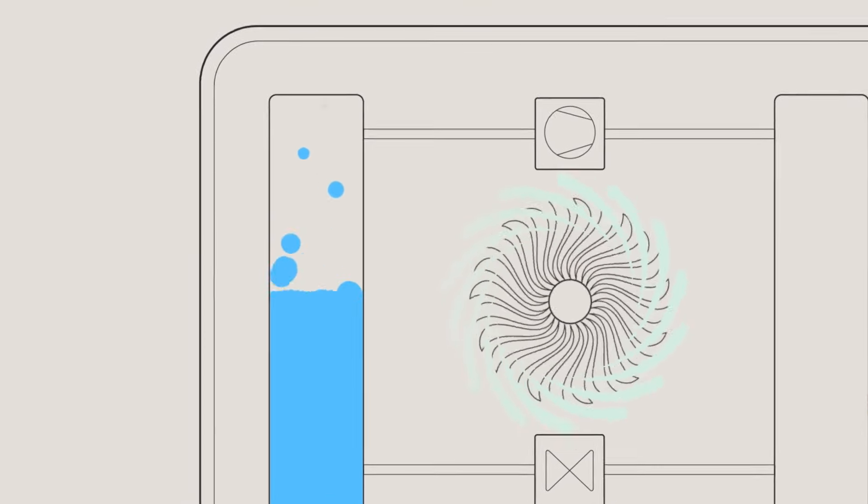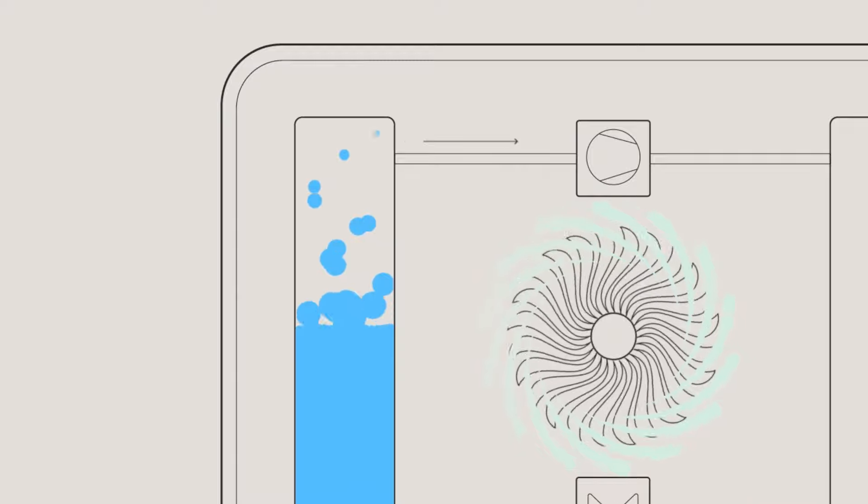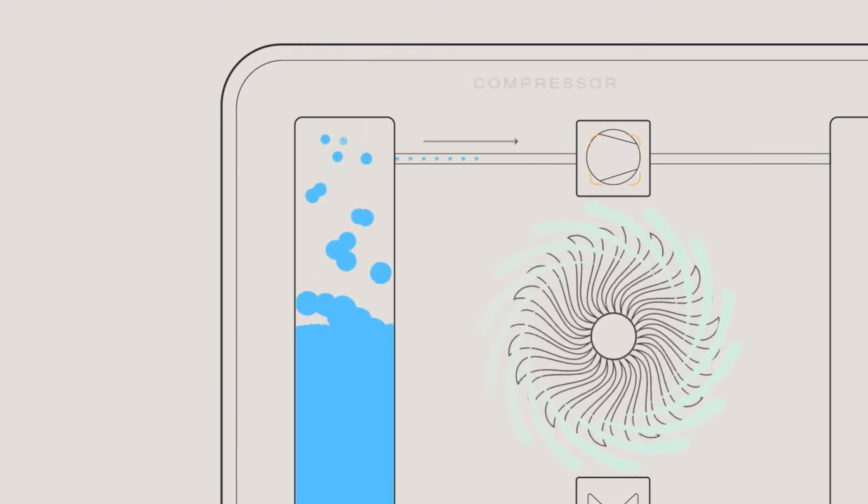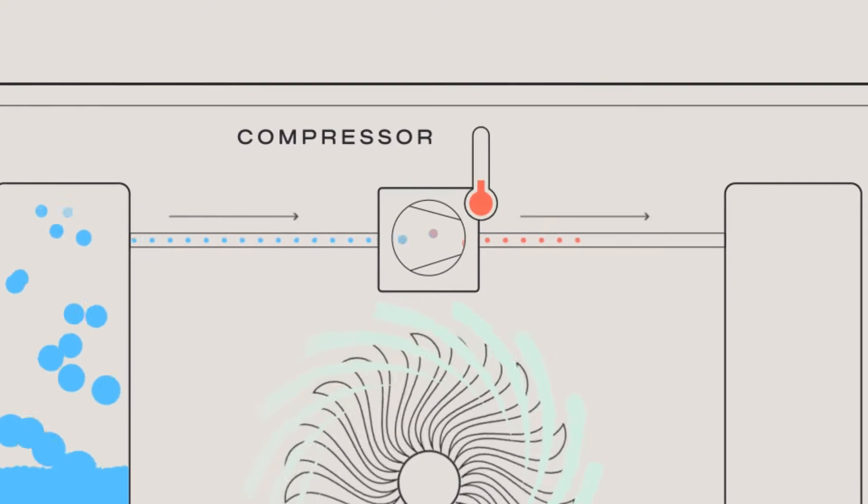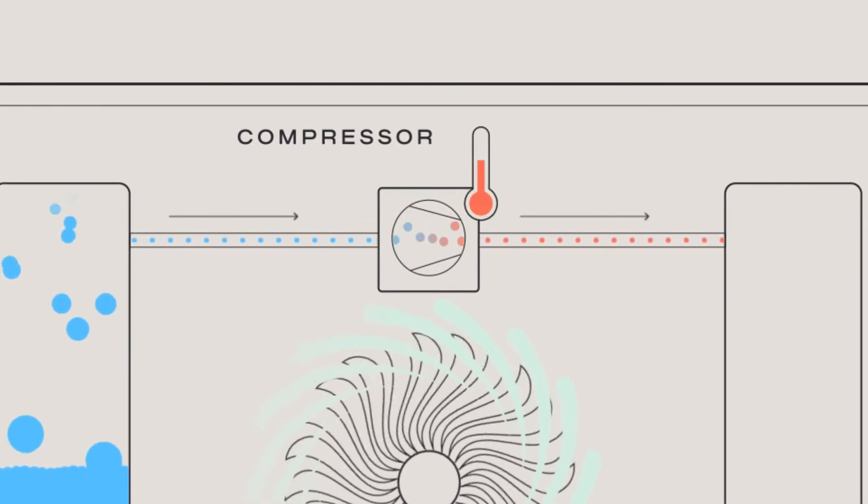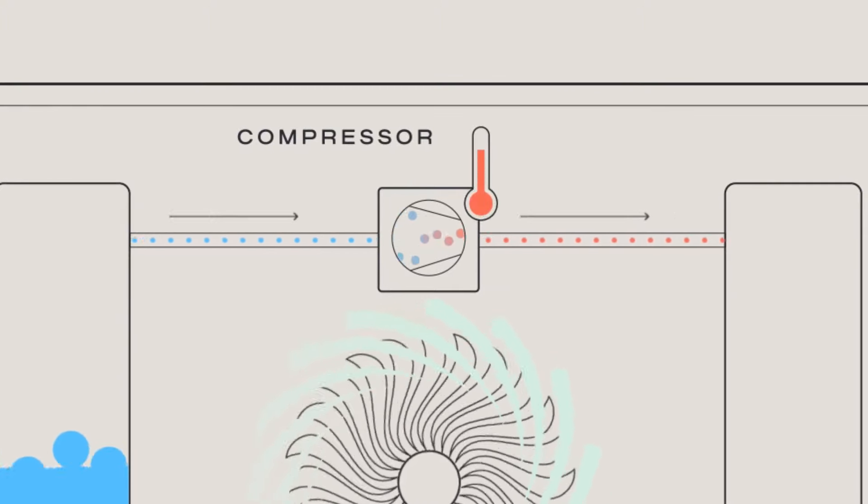As the refrigerant passes through the evaporator, it turns from liquid to gas and enters into the compressor. The compressor raises the pressure to heat the gas, because when the pressure of a gas increases, its temperature also increases.